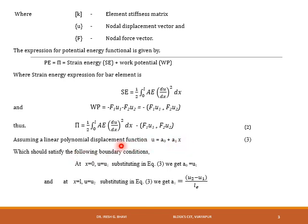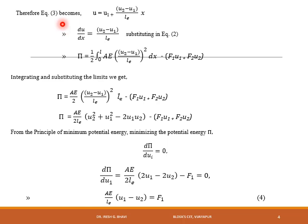This polynomial displacement function must satisfy the boundary conditions. At x = 0, that is at node 1, u = u1. Substituting in equation 3, we get A0 = u1. Similarly, at node 2, at x = L, u = u2. Substituting in equation 3, we get A1 = (u2 − u1)/Le. Therefore, substituting A0 and A1 back, equation 3 becomes u = u1 + [(u2 − u1)/Le]·x. Differentiating with respect to x, we get du/dx = (u2 − u1)/Le.